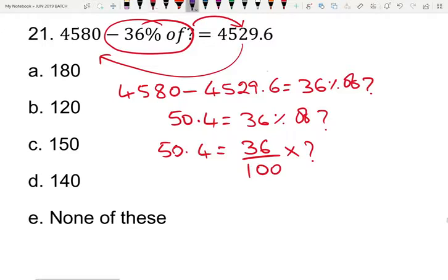After cancellation, multiplying by 10 on both sides: 50.4 times 10 gives us 504. This can be written as 5040 equals 36 times the unknown number.